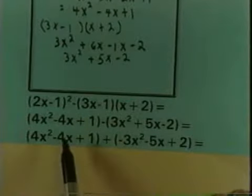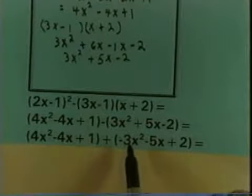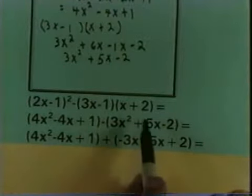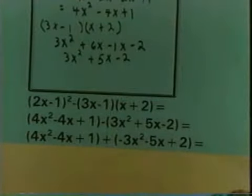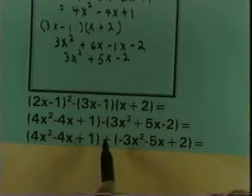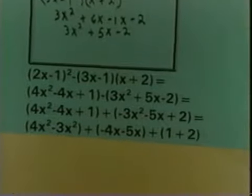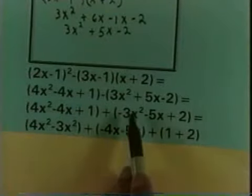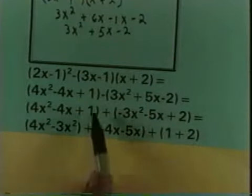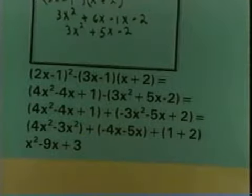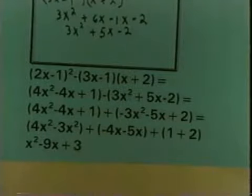So I have 4x squared minus 4x plus 1, plus the opposite of 3x squared, which is negative 3x squared. The opposite of a positive 5x is a negative 5x. The opposite of a negative 2 is positive 2. Now that I have addition, I can simply combine like terms — 4x squared with negative 3x squared, negative 4x with negative 5x, and 1 with 2. So my answer will be x squared minus 9x plus 3.